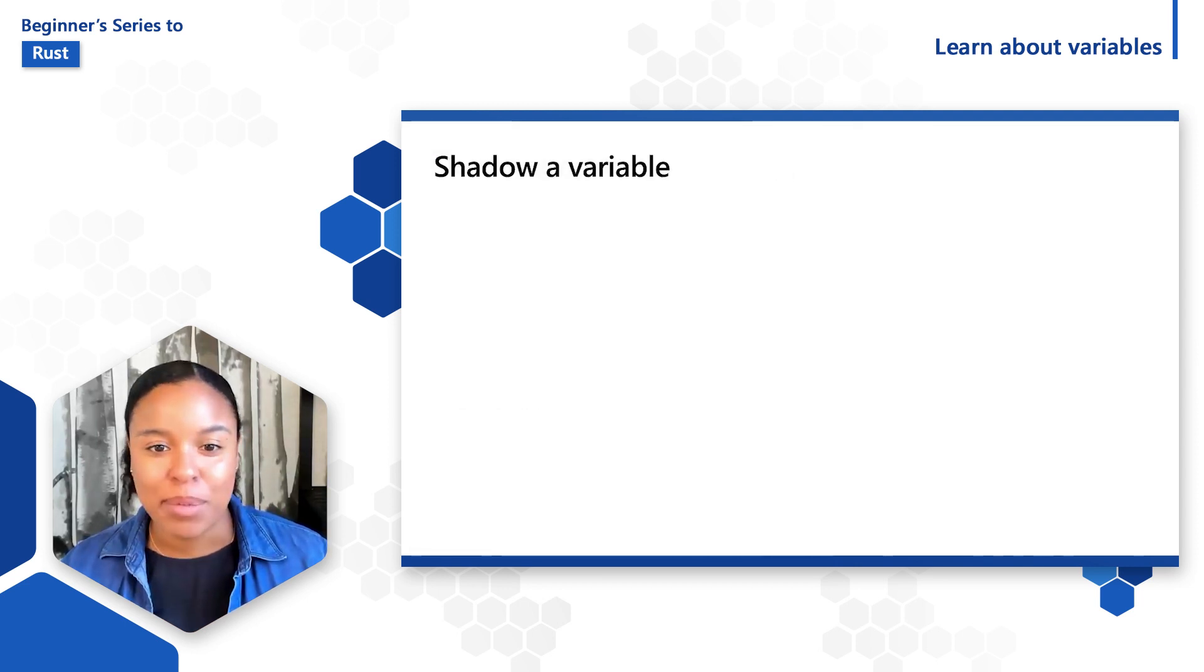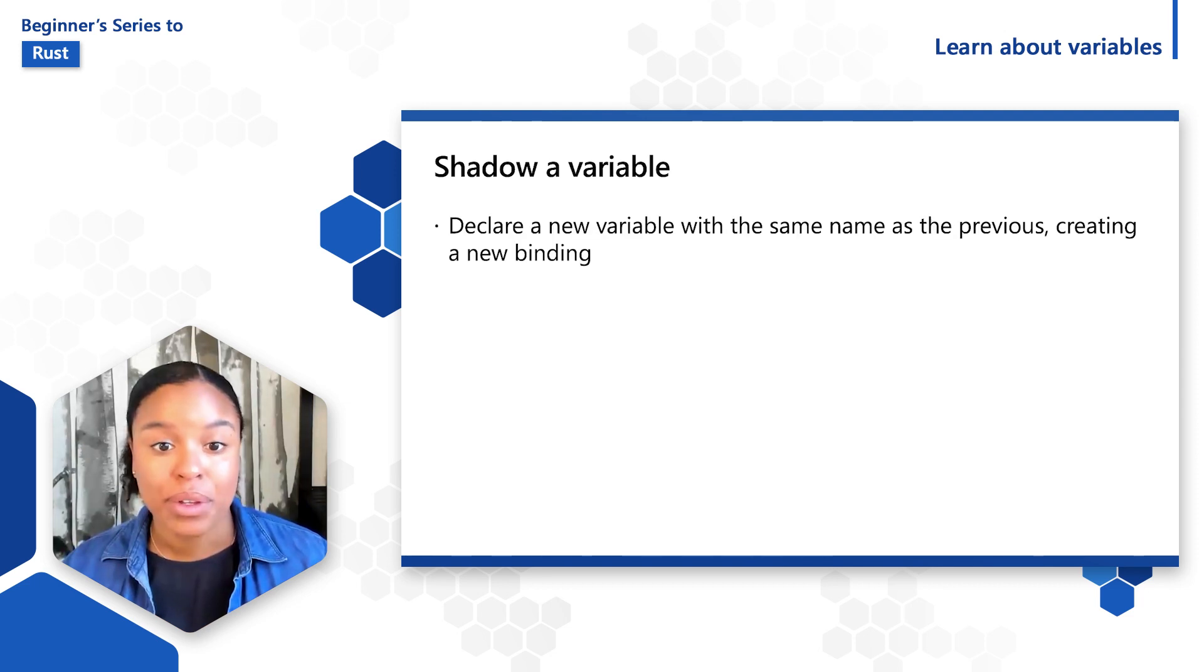The last concept I'm going to cover in this video is shadowing. You can also declare a new variable with the same name as the previous variable, which creates a new binding. In Rust, this operation is called shadowing because the new variable shadows the previous variable.